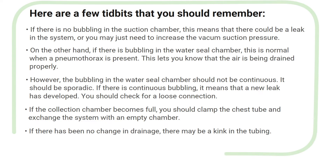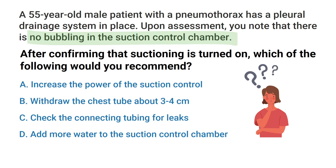Taking everything into consideration, since there is no bubbling in the suction chamber, this tells us that the correct answer has to be either A or C. But the question states that the suctioning is turned on, so the best thing we can do in this case is to check the tubing to see if it has any leaks. Which means the correct answer is C: check the connecting tubing for leaks.